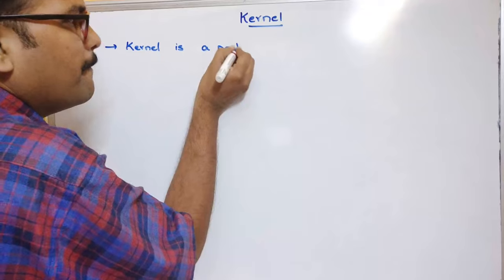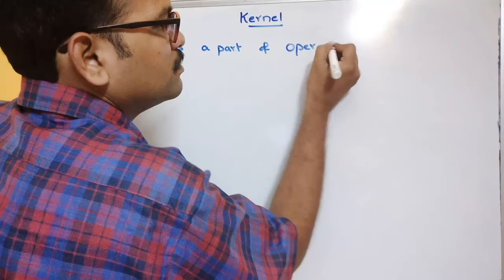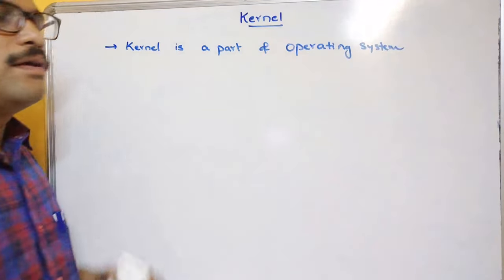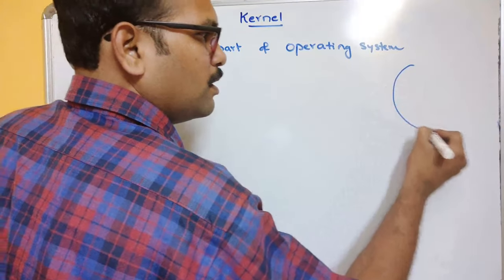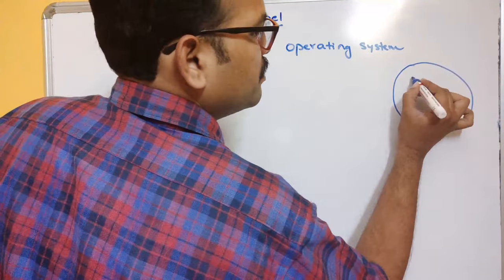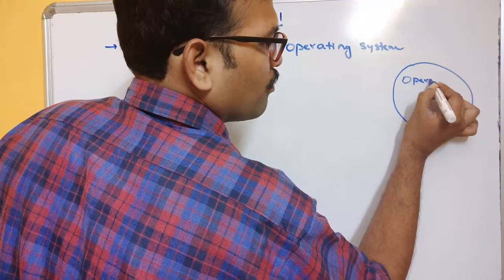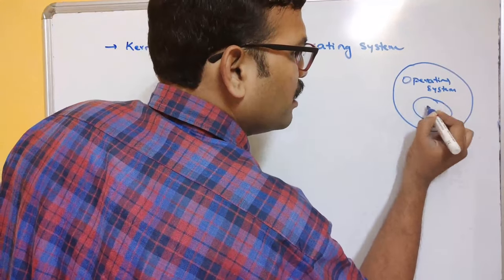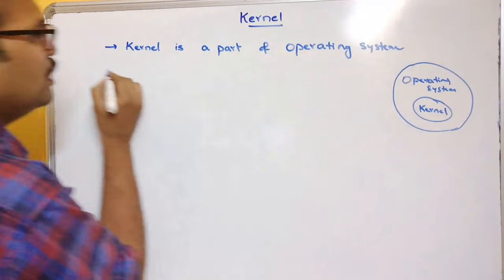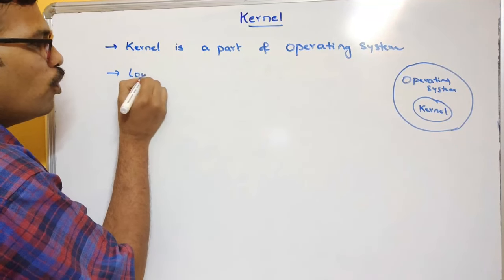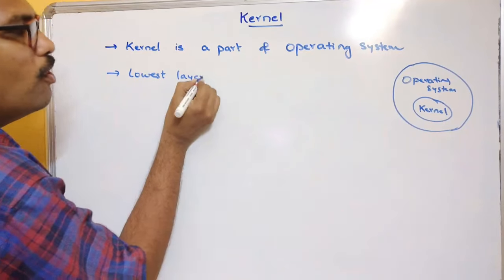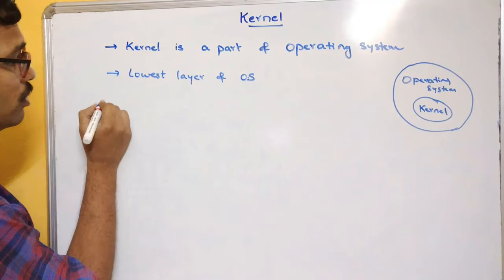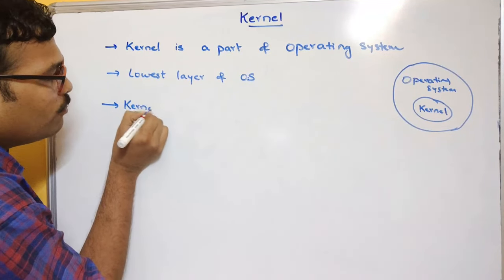So what is a kernel? The kernel is a part of the operating system. Within the operating system, there is one more layer called the kernel. So a kernel is the lowest layer of the operating system.